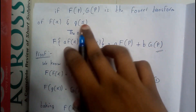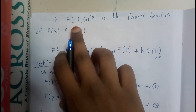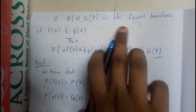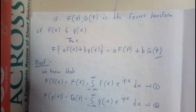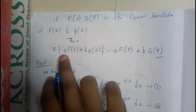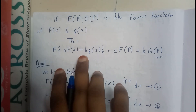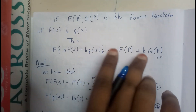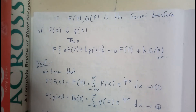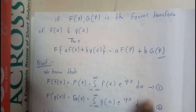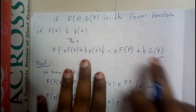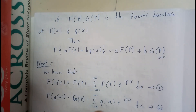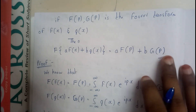If F of p is the Fourier transform of f of x, and G of p is the Fourier transform of g of x, then the Fourier transform of a times f of x plus b times g of x equals a times capital F of p plus b times capital G of p. This is what we need to prove. The basic thing you need to remember is this equation — if you remember that, you can solve it.